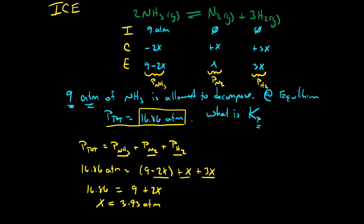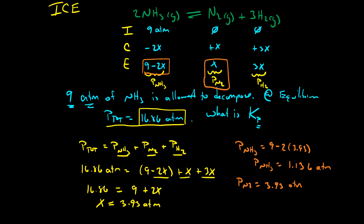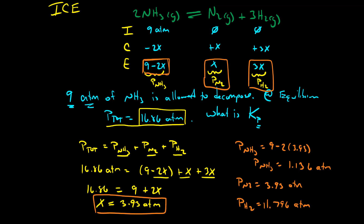Now that we know X, we can figure out the equilibrium pressure of each gas. The equilibrium pressure of ammonia is nine minus two times 3.93, which equals 1.136 atmospheres. The equilibrium pressure of nitrogen equals X, which is 3.93 atmospheres. And the equilibrium pressure of hydrogen is three times X, which is 11.796 atmospheres. Once we've solved for X, the ICE table gives us the equilibrium pressure of all three gases — ammonia, nitrogen, and hydrogen.